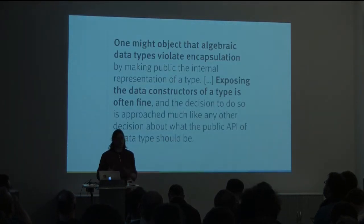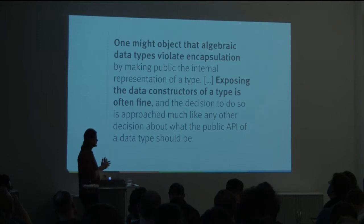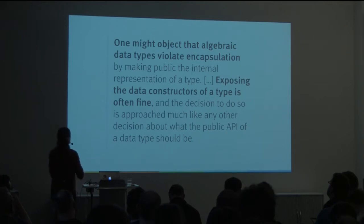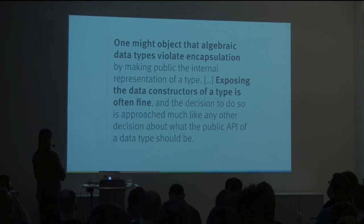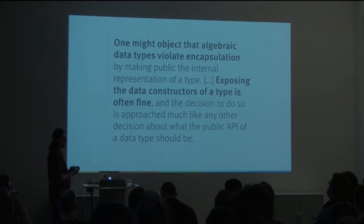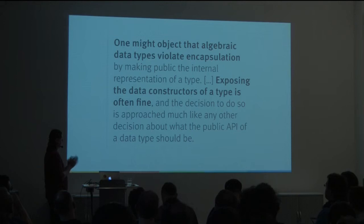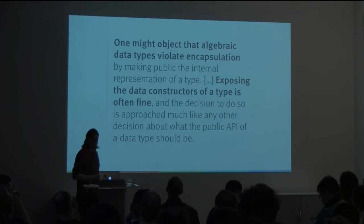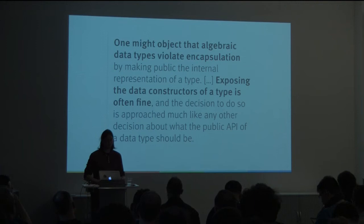Among other things, it contains this sidebar, which is maybe the most controversial thing about the book — except maybe the fact that they're using Scala. I'm going to read it to you: "One might object that algebraic data types violate encapsulation by making public the internal representation of a type. Exposing the data constructors of a type is often fine, and the decision to do so is approached much like any other decision about what the public API of a data type should be." The emphasis is mine, of course.